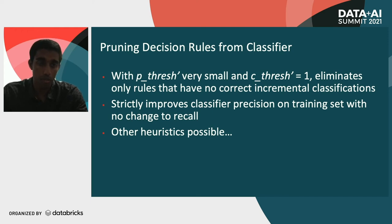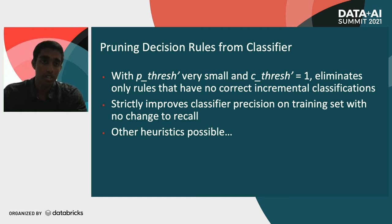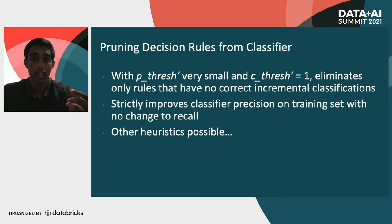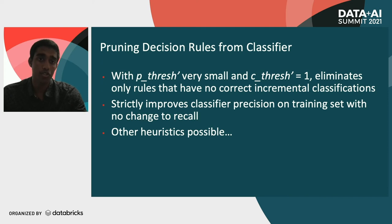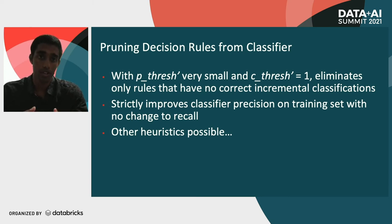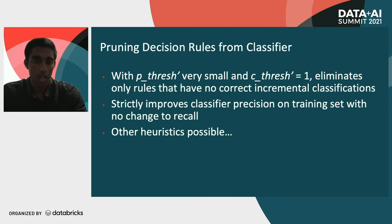Incremental precision is the number of new anomalies a rule classifies over all previous rules, divided by the total new examples it classifies compared to prior rules. We discard rules with incremental precision less than P_thresh_prime and incremental examples classified greater than C_thresh_prime. When you set P_thresh_prime to a small value like 10^-2 and C_thresh_prime to one, this eliminates only rules that classify no new true anomalies beyond prior rules — strictly improving the classifier's precision on the training set with no change to recall.